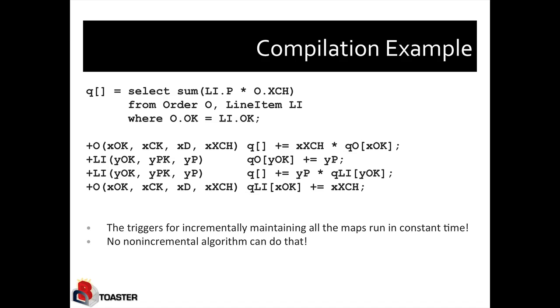And observe that each of these triggers actually is a constant time function. Which is actually very interesting because the query does a join of two relations. A naive implementation would actually take quadratic time in the size of the database. In practice there are better ways of doing this, but there is no way in constant time of evaluating this query obviously. But as we have just seen, this query is incrementally maintained in constant time using recursive incremental view maintenance.